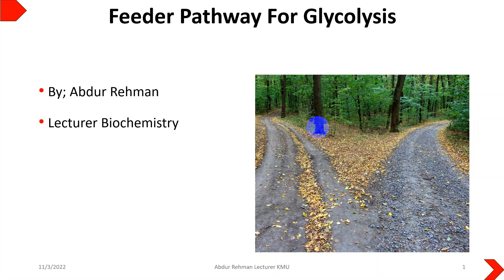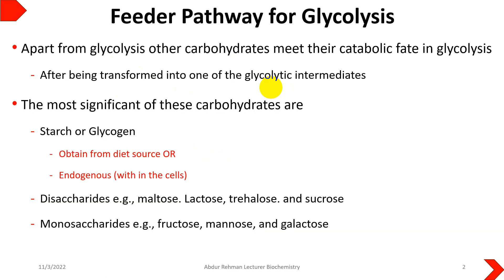Welcome back to my YouTube channel. Today we will discuss the feeder pathways for glycolysis. As we studied in our previous lecture, glycolysis is the major pathway in most cells, starting from glucose and ending at pyruvate or lactate. There are certain other intermediates which also become part of glycolysis. Apart from glucose, the most significant carbohydrates are starch or glycogen.